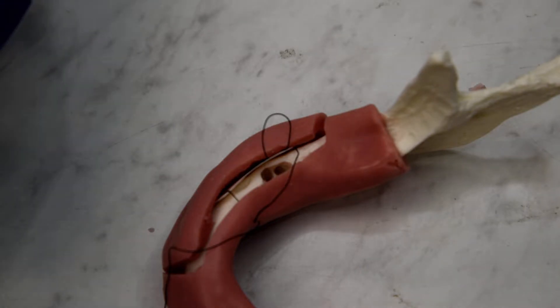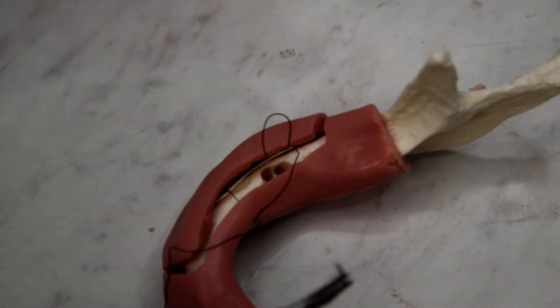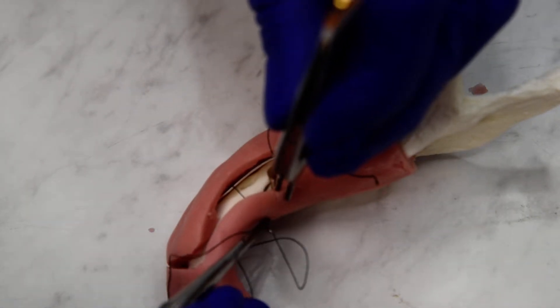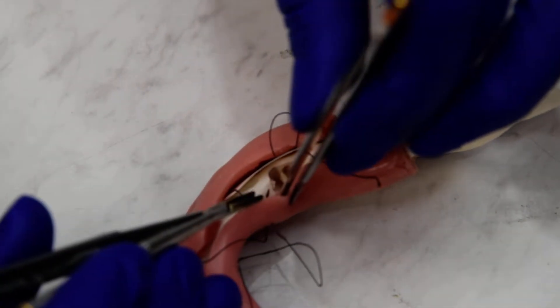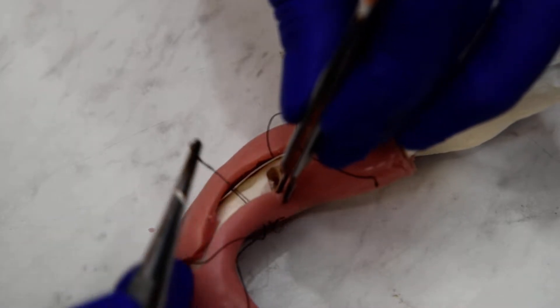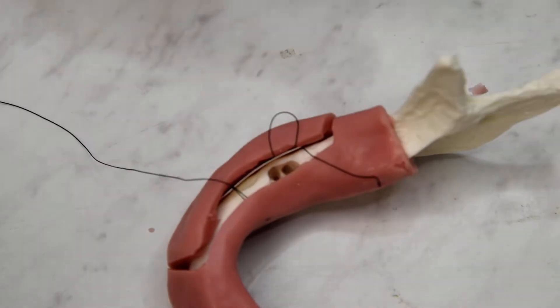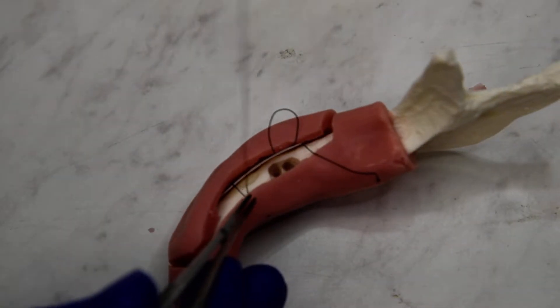We're going to go right back in the lingual, adjacent to where we just came out. You could also do simple periosteal bites, though it is difficult on the lingual and mandible.